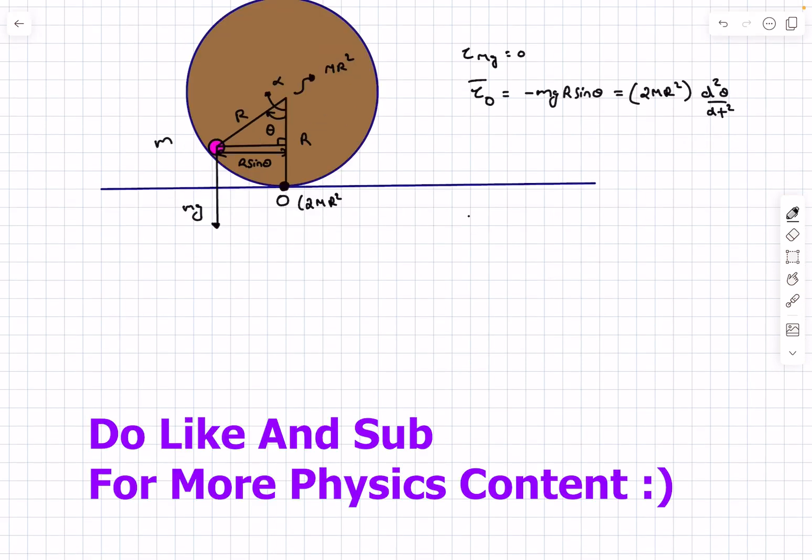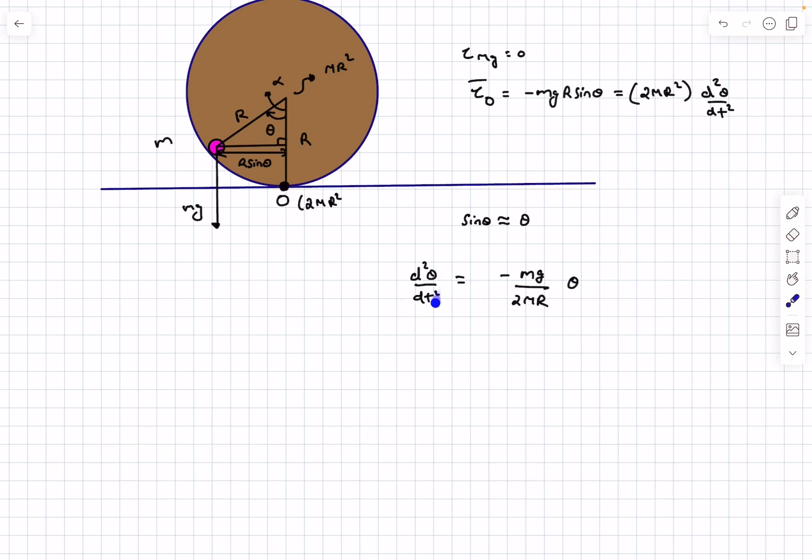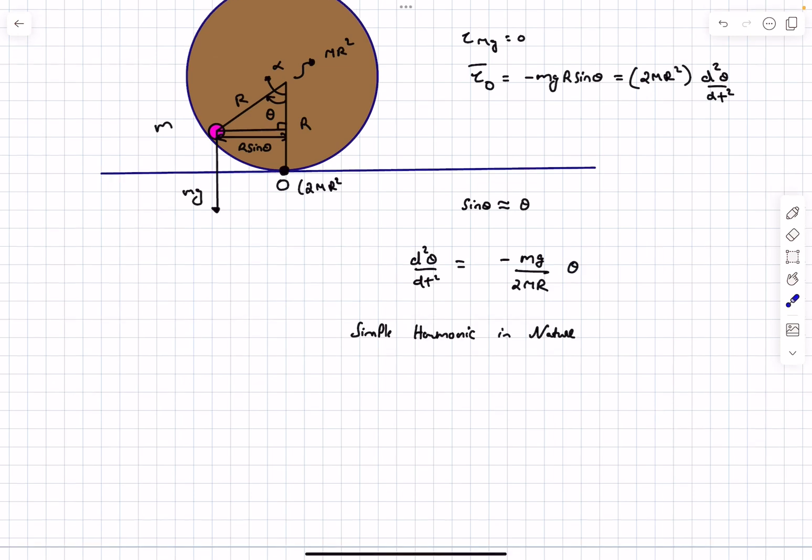As we have to comment on small oscillations, we can take the value of sin theta to be approximately theta. Finally, our expression reduces to theta double dot equals minus mg upon 2Mr times theta. This differential equation indicates that the motion of the composite body is simple harmonic in nature.